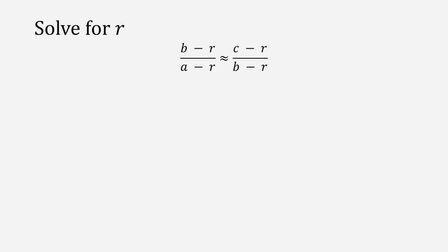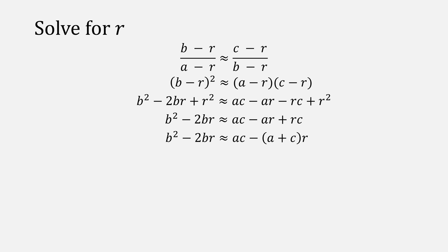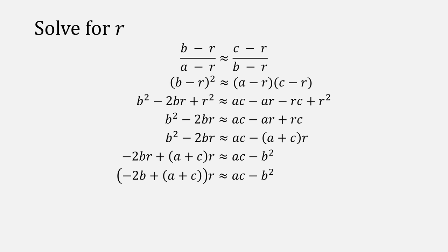Here's how we'll do that. Starting with this formula, we can remove the denominators and then expand them. Since they have r squared in both of them, we can subtract those out. Then we factor out an r from the right side, and move everything with an r term to the left and everything else to the right. Afterwards, we factor out r again and rearrange it so that it looks like this.